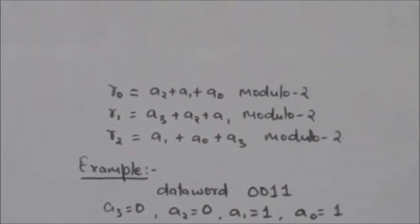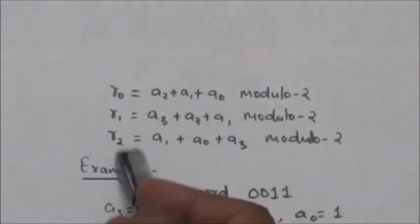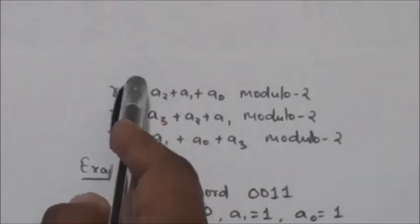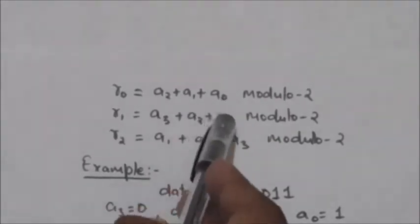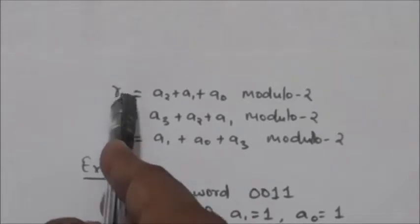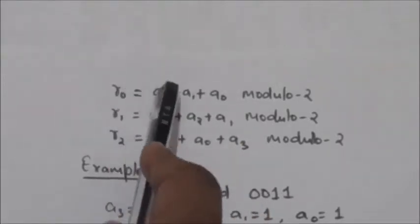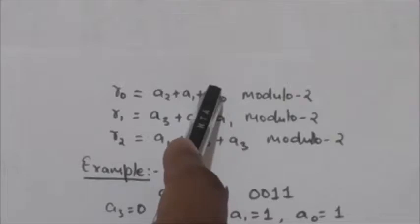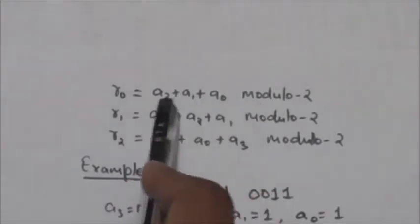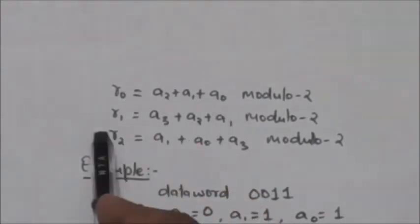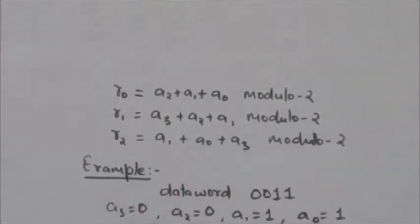These check bits r0, r1, and r2 will be evaluated by these equations. r0 is the parity bit of a2, a1, and a0 — so together r0, a2, a1, and a0 must contain an even number of ones. Similarly, r1 is the parity bit for a3, a2, and a1. And r2 is the parity bit of bits a1, a0, and a3.